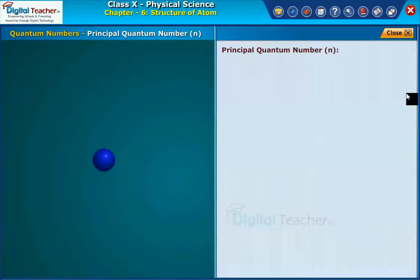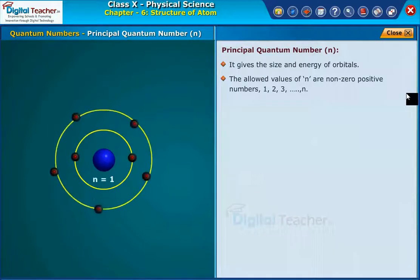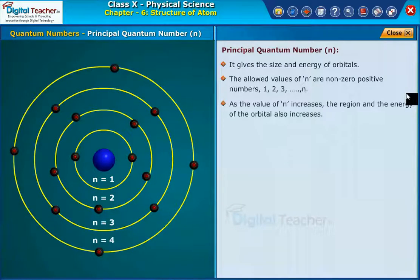Principal quantum number. It gives the size and energy of orbitals. The allowed values of n are non-zero positive numbers 1, 2, 3 up to n. As the value of n increases, the region and the energy of the orbital also increases.